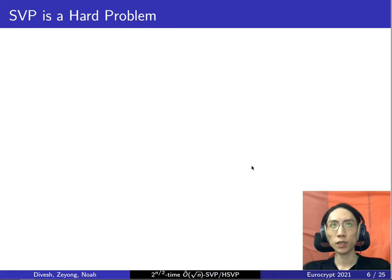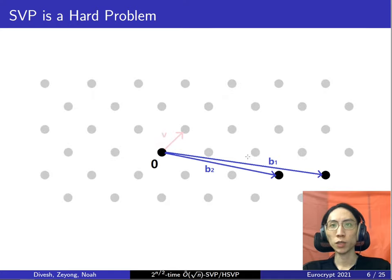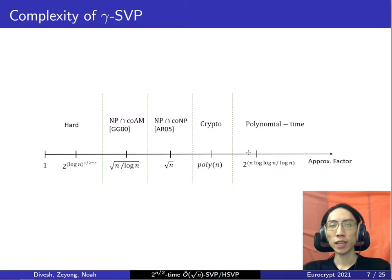The shortest vector problem is a hard problem. For example, if the only information given is two basis vectors b1 and b2, and this basis is not a very nice one, it's not straightforward to see where the shortest vector v would lie. More concretely, there have been many studies on the hardness and complexity of gamma-SVP across different approximation factors. When the approximation factor is around poly(n), it is most relevant to cryptography.